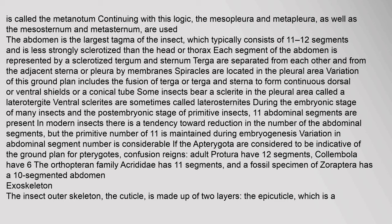Each segment of the abdomen is represented by a sclerotized tergum and sternum; terga are separated from each other and from the adjacent sterna or pleura by membranes. Spiracles are located in the pleural area. Variation of this ground plan includes the fusion of terga or terga and sterna to form continuous dorsal or ventral shields or a conical tube. Some insects bear a sclerite in the pleural area called a laterotergite. There is a tendency toward reduction in the number of abdominal segments, but the primitive number of 11 is maintained during embryogenesis.